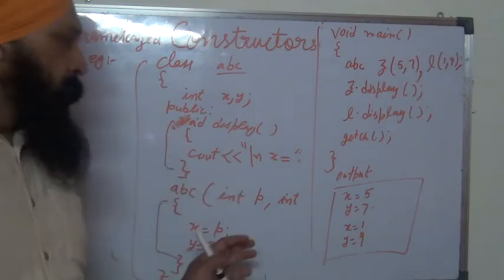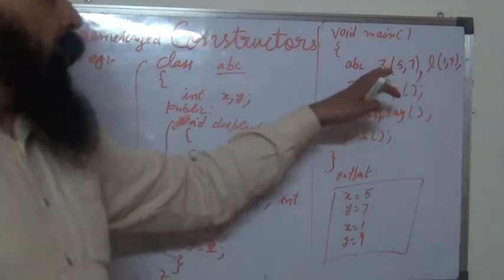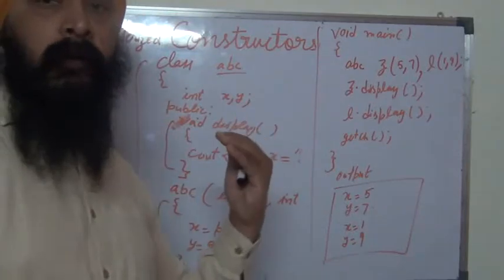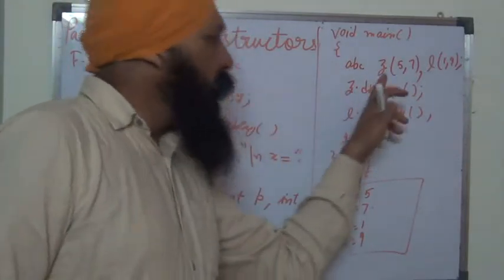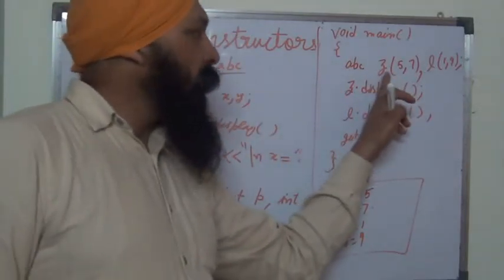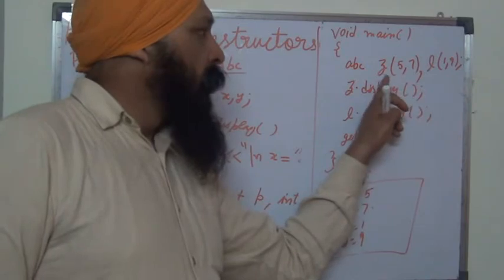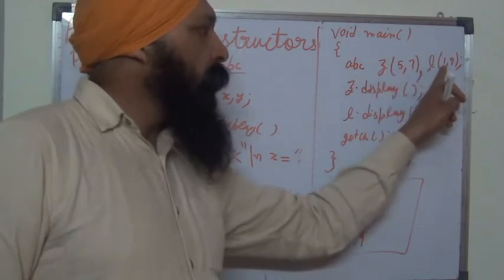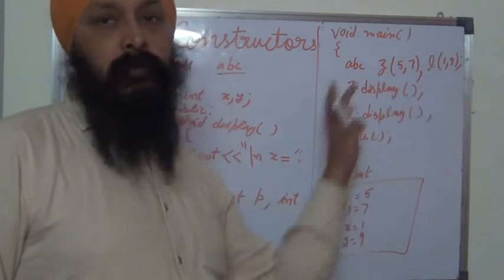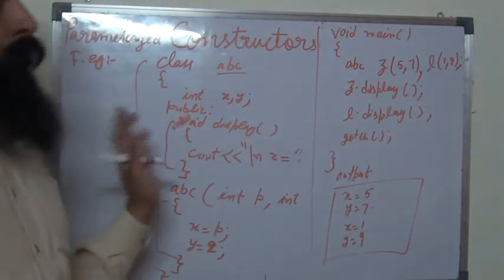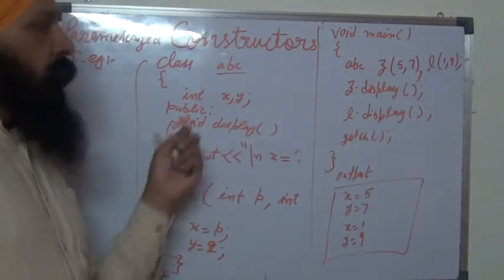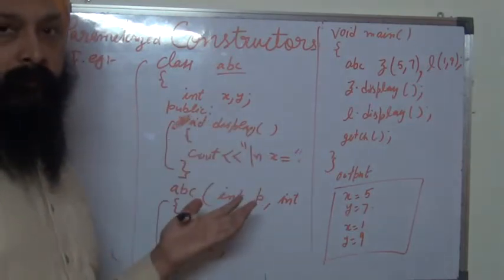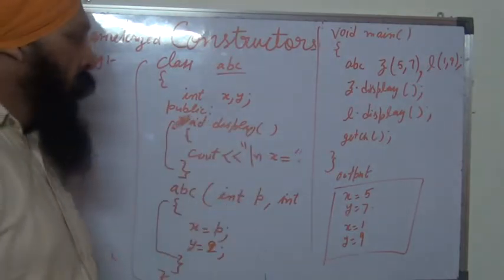With a default constructor, we cannot initialize different objects to different values. But with the parameterized constructor, object z is initialized with 5 and 7, and object l with 1 and 9 — which is the advantage of the parameterized constructor.